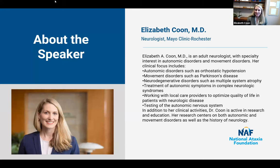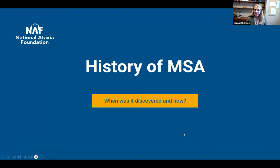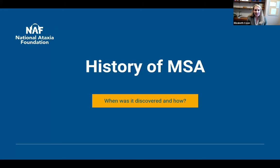Thank you so much for that very kind introduction. I'm really honored to be here today and excited to talk about multiple system atrophy. We are going to start by going over the history of multiple system atrophy. The terminology in MSA can be really complex. I will also break it down into the different types — the cerebellar type and the Parkinson's type — and then end by talking about ways we can care for patients with MSA.